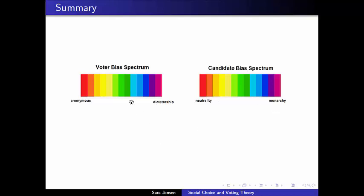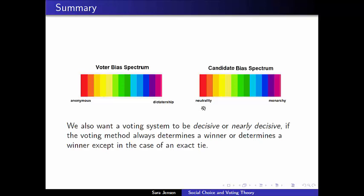So far we've given examples of systems that are not anonymous but haven't been pushed as far as becoming a dictatorship, and systems that are not neutral but haven't become a monarchy. In general, as we proceed, we're going to want to consider things that are as fair as possible on both the voter and candidate bias spectrum — systems that are anonymous and neutral. Because we're mathematically minded, one way to force a system to be both anonymous and neutral would be to say: we've looked at everyone's preferences and all the candidates, and the only way to be fair is to make no decision.